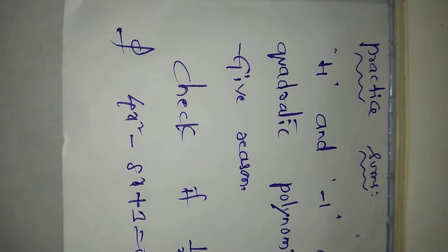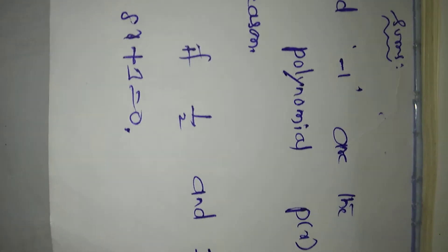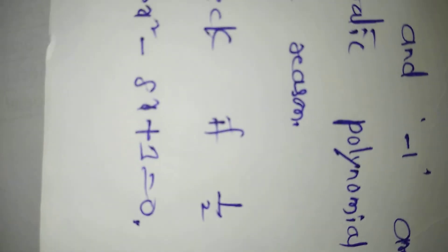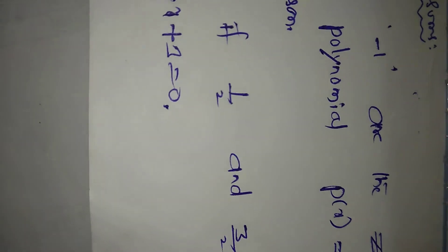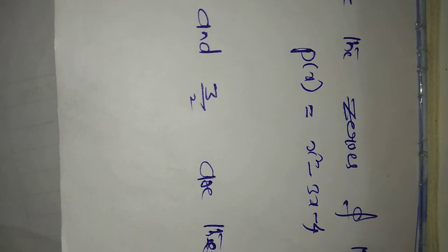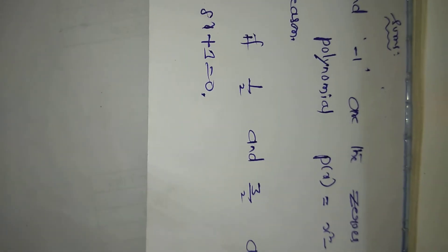Practice sums: 4 and minus 1 are the zeros of the quadratic polynomial P of x equals x squared minus 3x minus 4. Why? Give reason. Next question: check if 1 by 2 and 3 by 2 are the zeros of 4x squared minus 8x plus 8. These two problems you have to practice. Don't get confused. If you don't get it, listen to the previous class once.